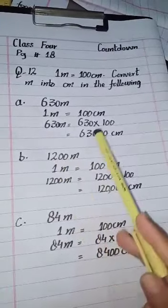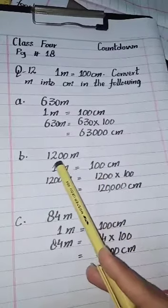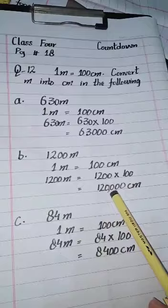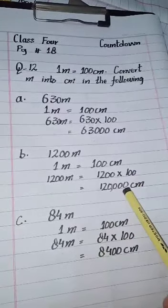Part b: Now we have to change this into centimeters. One meter equals 100 centimeters. Multiply 1200 by 100. You will write 1200 as it is, and since there are two zeros in 100, you will add two zeros here, making it 120,000 centimeters.